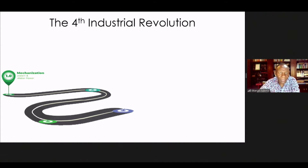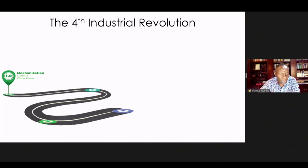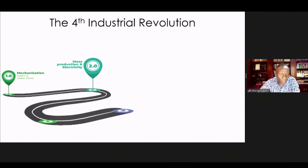I want to take you through the fourth industrial revolution. The first industrial revolution around the 1700s was centered on mechanization and water power — at that time, Africa was going through slavery. Then came the second industrial revolution with mass production and electricity in the 1900s, but Africa was undergoing colonization. So Africa did not benefit much from the second industrial revolution.